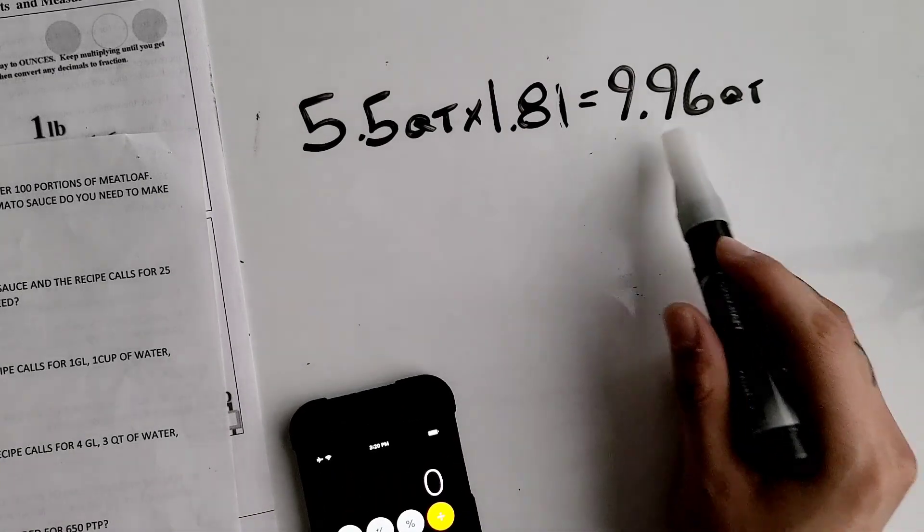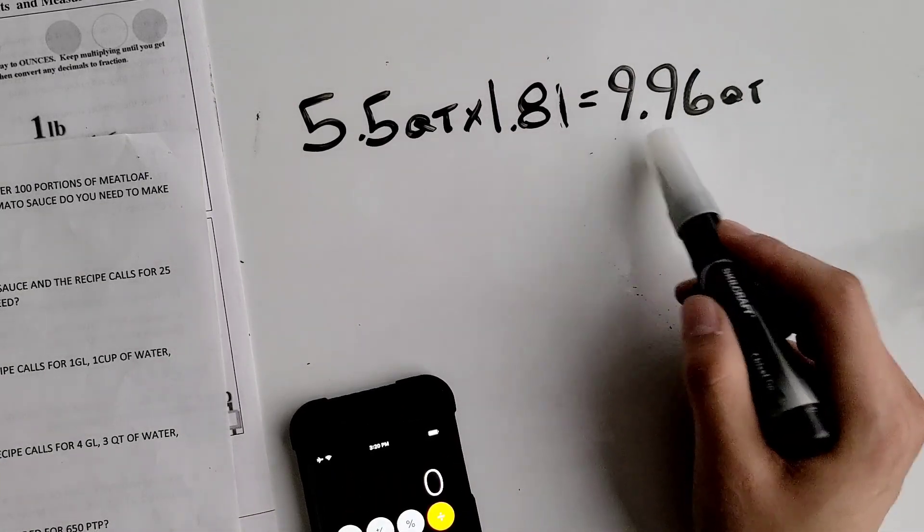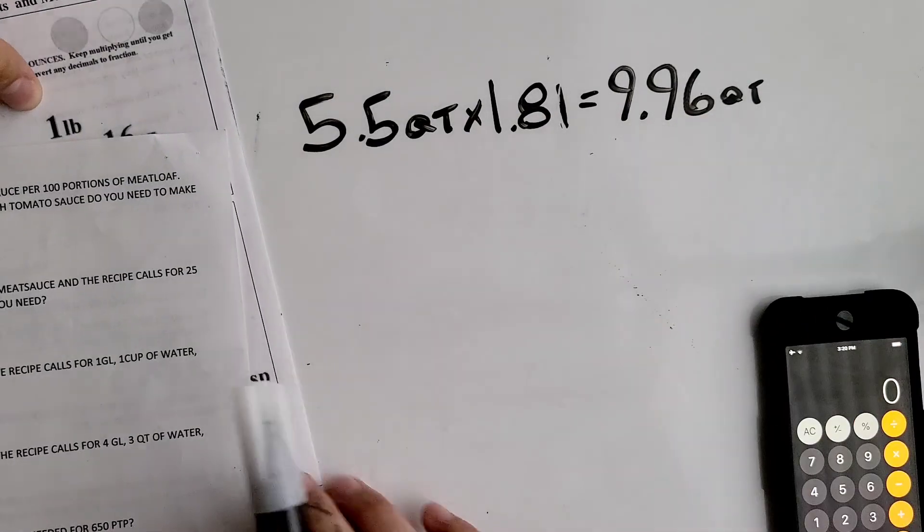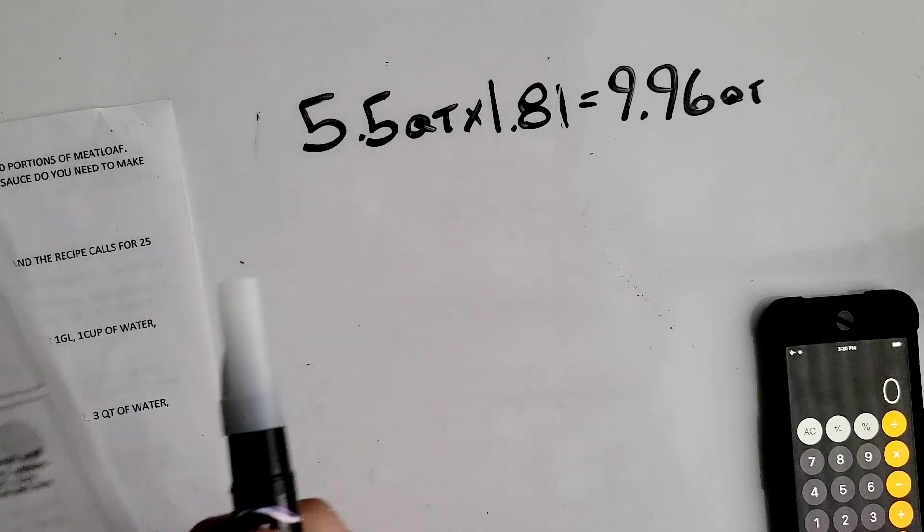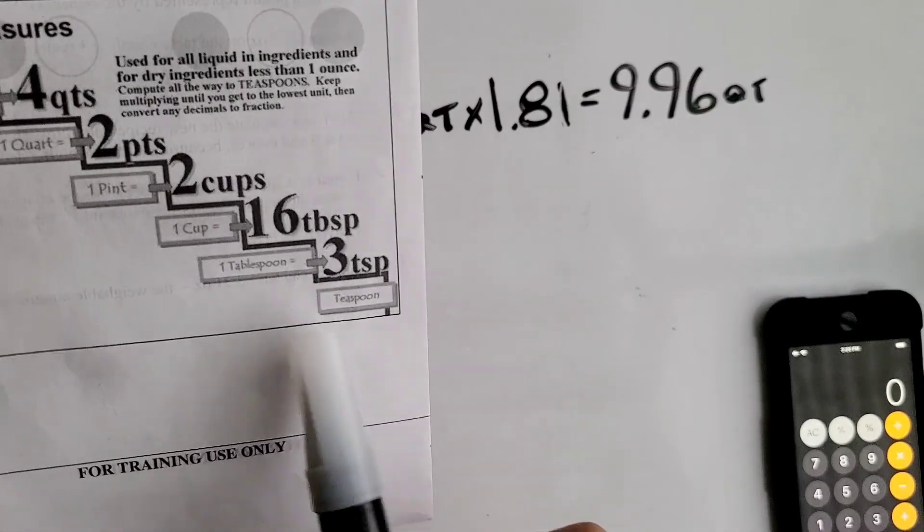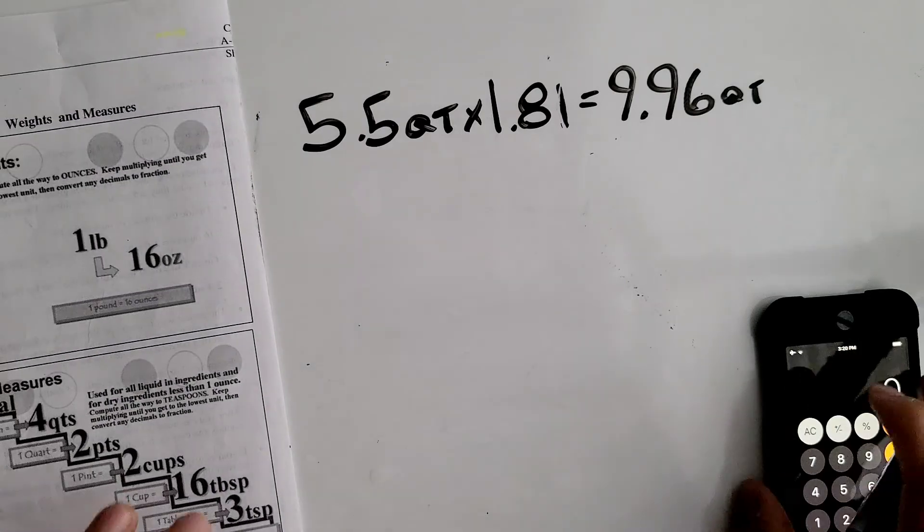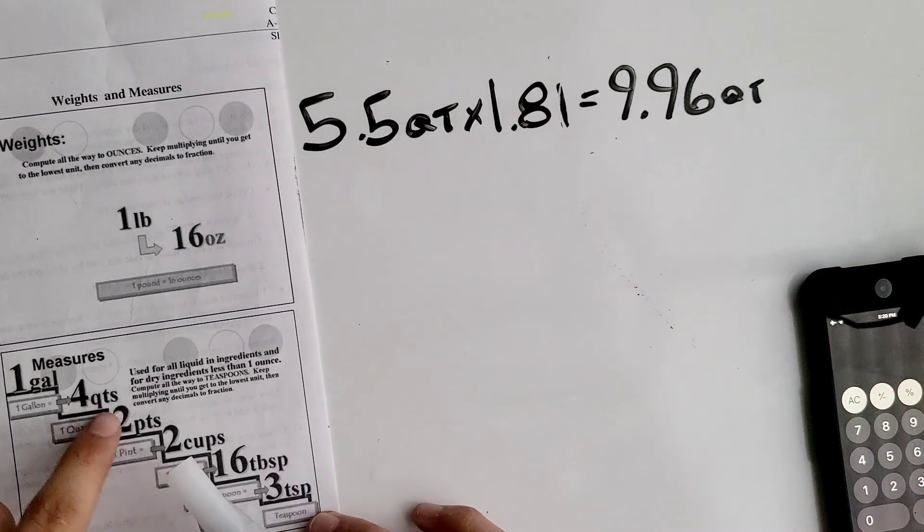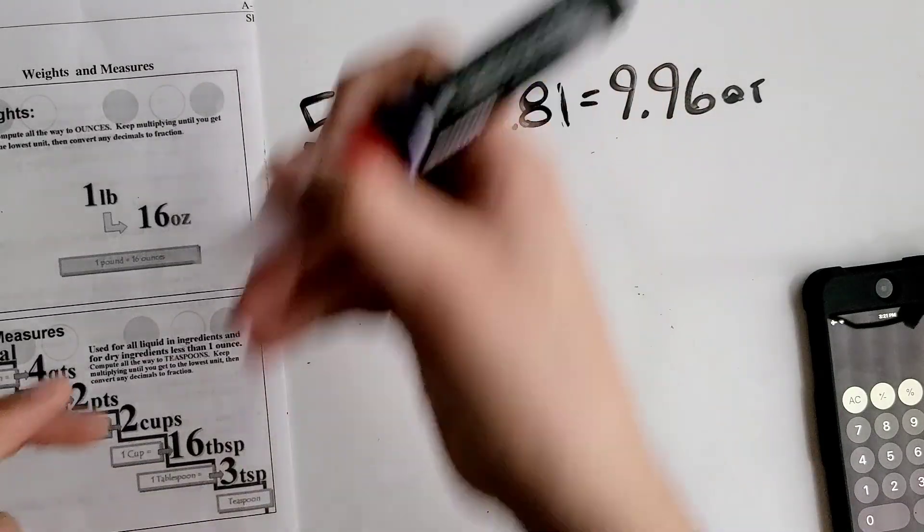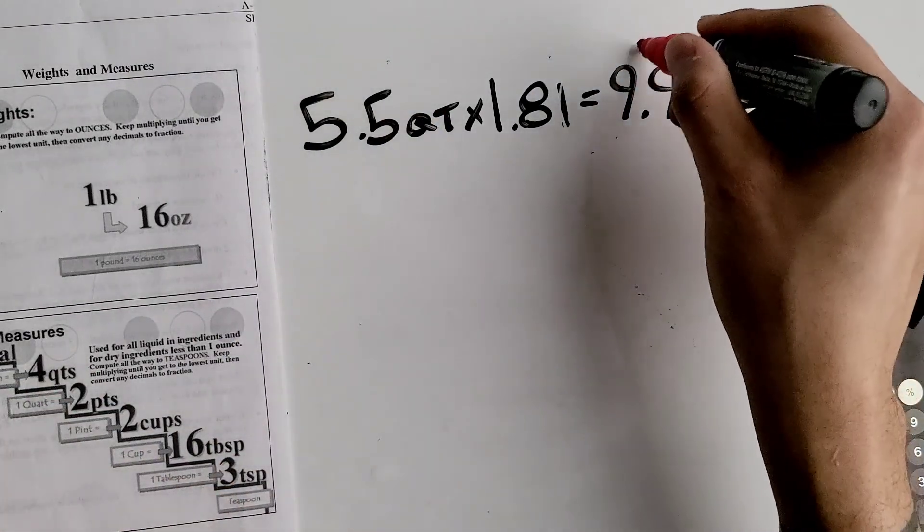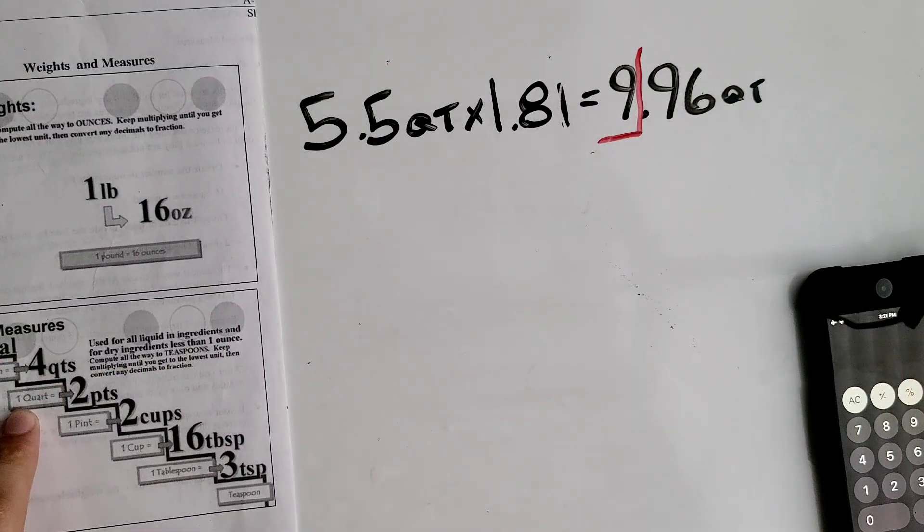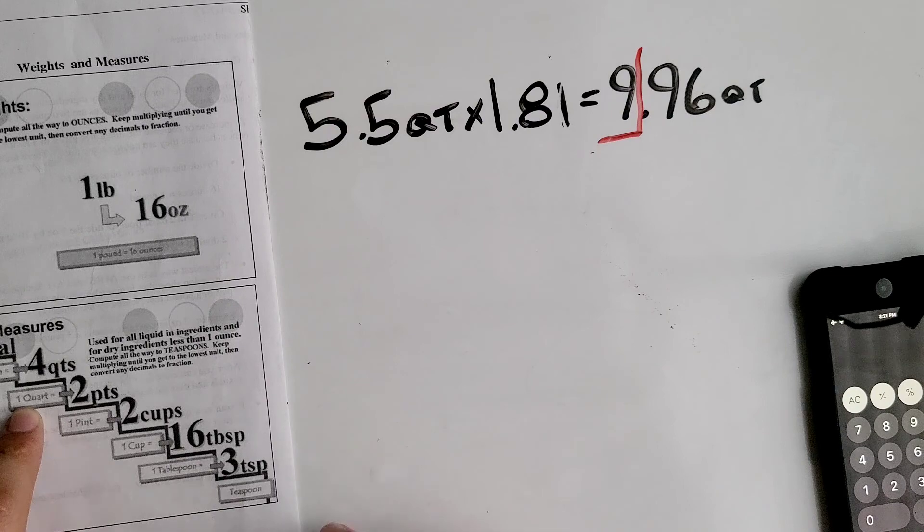We can't leave it like that because of the decimal. We have to make it into its lowest unit. In this case it's teaspoons if possible. When we're going back down, we have to multiply. We want to block off our whole number. We're at quarts right now, so we have to multiply it by the unit below it, which is pints.